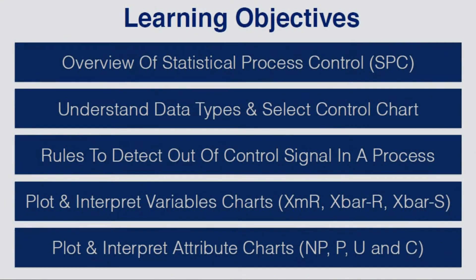Our learning objectives for this guided project are to get an overview of statistical process control, understand data types and a selection algorithm for control charts, understand the rules to detect out-of-control signals in a process, plot and interpret variables charts such as XMR, X-bar R, and X-bar S, and plot and interpret attribute charts such as NP, P, U, and C charts.